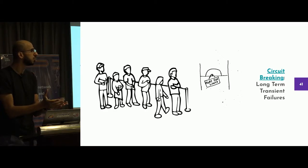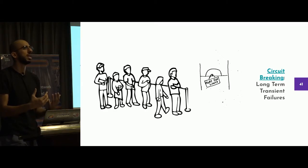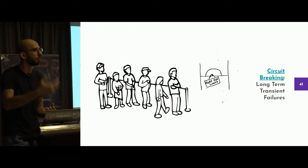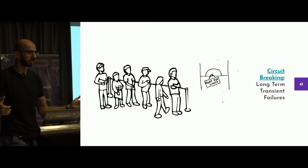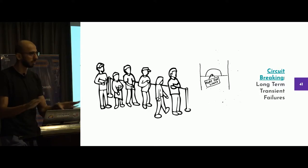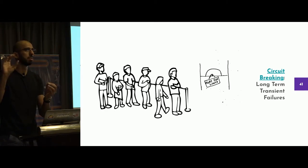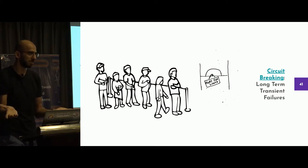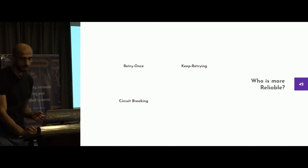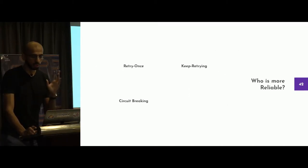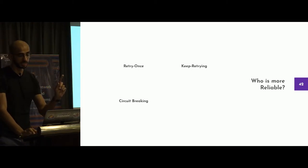Circuit breaking is very important because it defines the usability of your application. It lives on the fact that if it didn't work once, and it didn't work after a certain number of backoffs, give it some time — it's not going to happen by itself. Start using a different control mechanism. Maybe throw a good-looking error page, or alternatively watch a different video stream instead. So, who is more reliable — retry once, keep retrying, or circuit breaking?